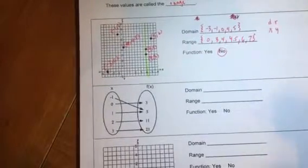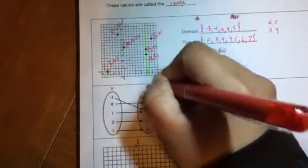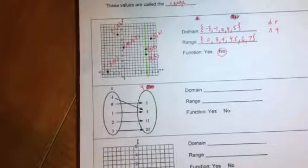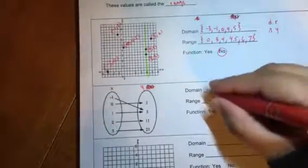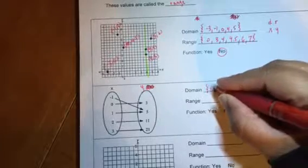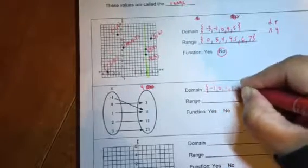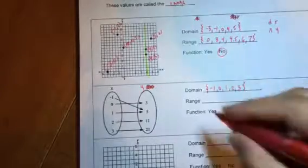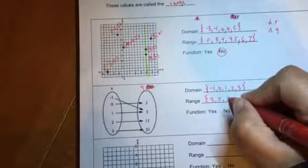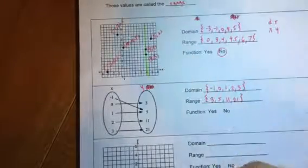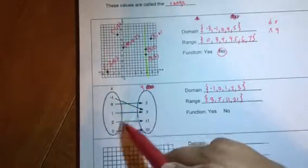Domain, I need y'all to remember that f of x just really means y. They'll have that on your EOC test. They'll have f of x, just remember that's the same thing as saying y. It's a fancy way of saying y. So your domain is with squiggles or with braces, negative 1, 0, 1, 2, 3. Your range, with braces, 3, 5, 11, and 21. Does it repeat? Only one arrow is coming out of each one of those x values, so it is a function.